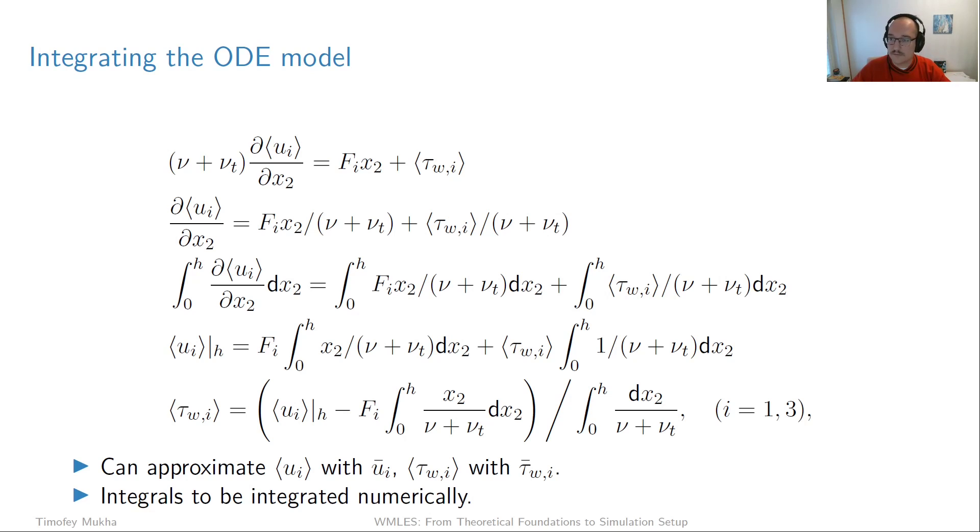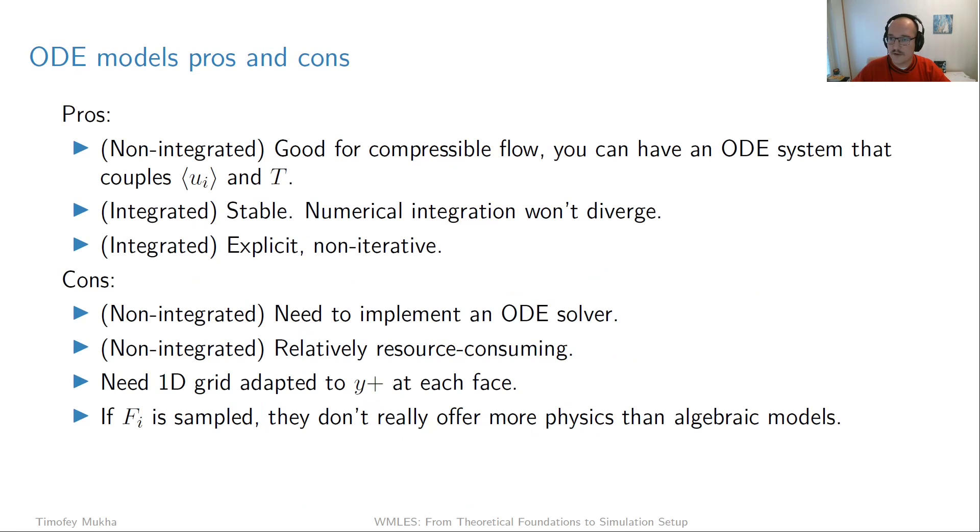This is basically all we have to say about ODE models. Let's recap their pros and cons. We'll distinguish two formulations: non-integrated, when we still have an ODE that we need to solve with some ODE solver, and the integrated one, when we did the second round of integration to get an explicit expression for tau wall. The good thing about non-integrated ones is that they're good when you have a compressible flow situation. Then you have a system of ODEs, one for momentum and one for temperature. Since those can be coupled together quite strongly, it's good to have them in one single ODE system.